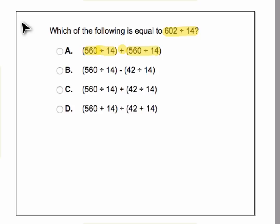In B, we have 560 divided by 14, and then 42 divided by 14, and we're subtracting those.